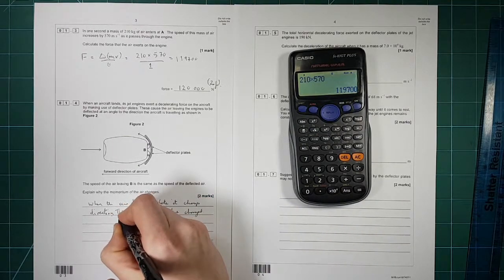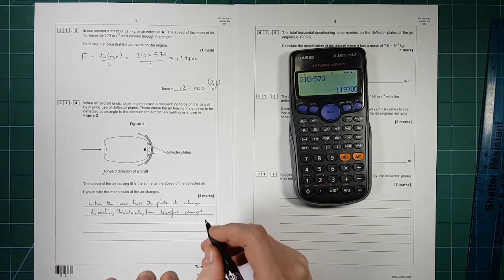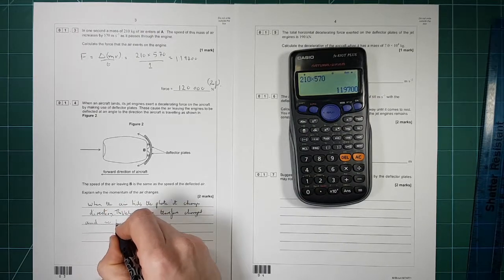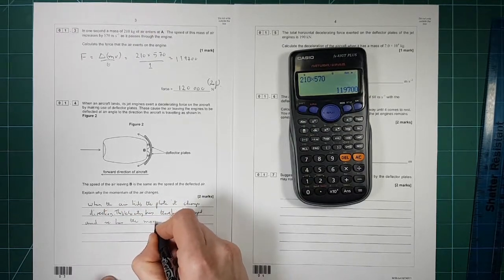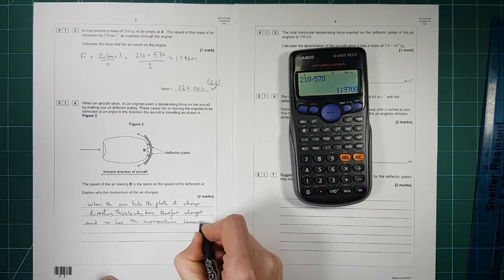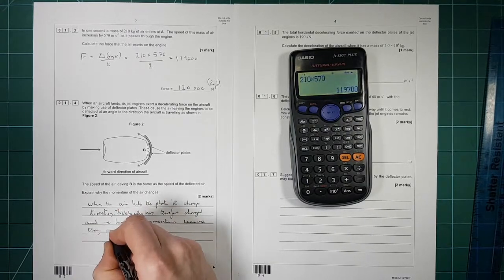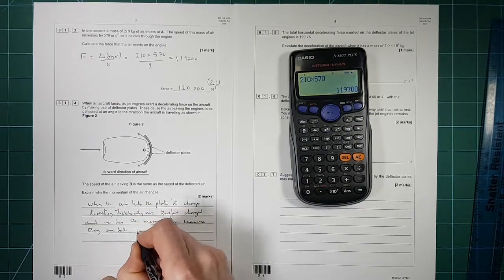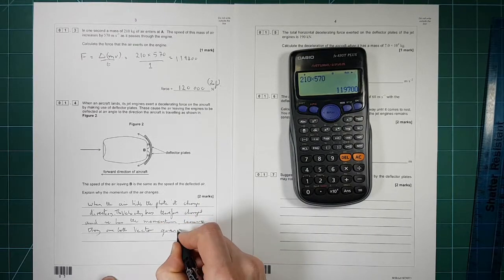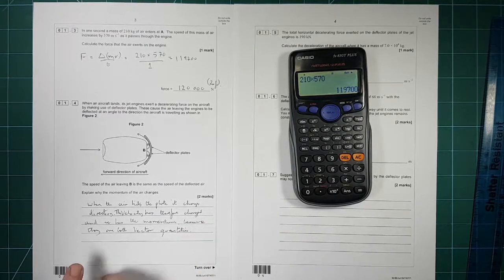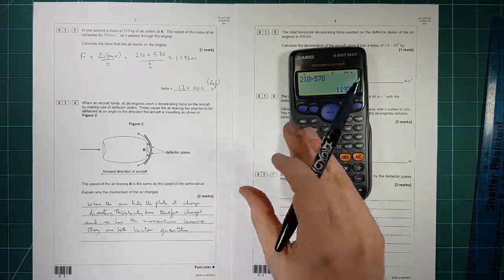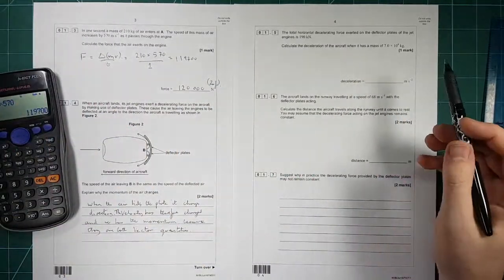Velocity has therefore changed. And so has the momentum because they are both vector quantities. So although the speed hasn't changed the velocity has because the direction has changed.